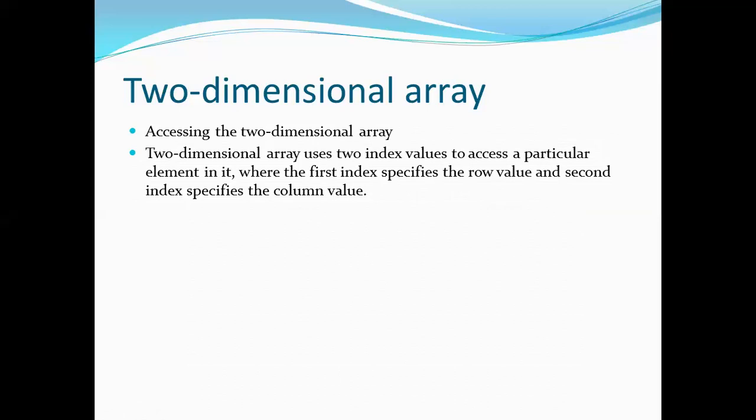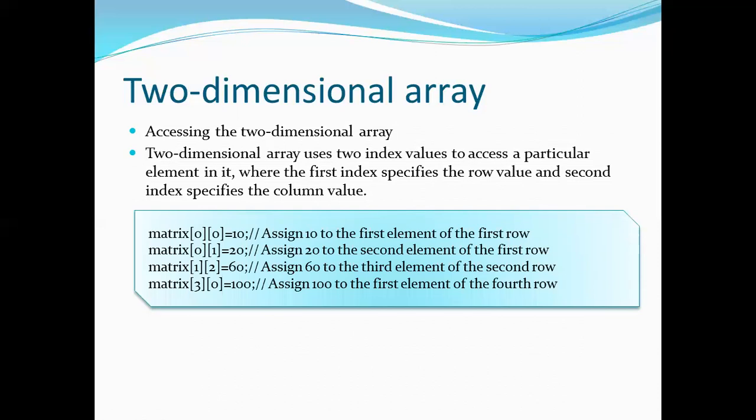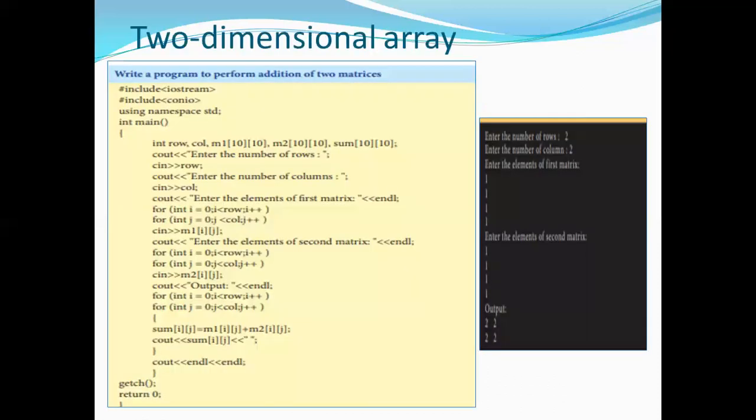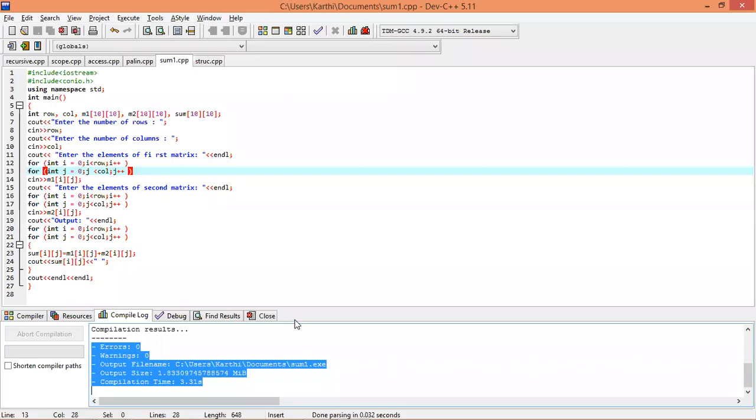The first element is row value, second row, third value. The second element is row value. The second element is access to the element. The second element is the addition of two matrices.